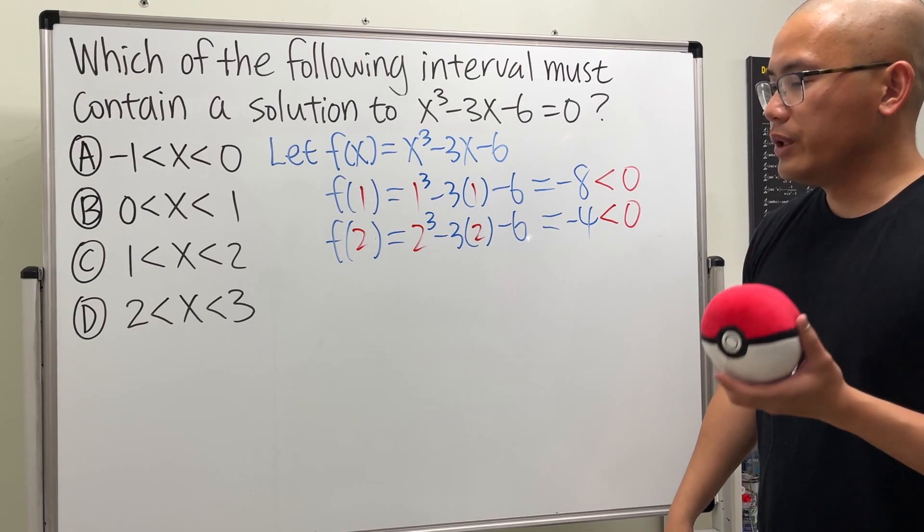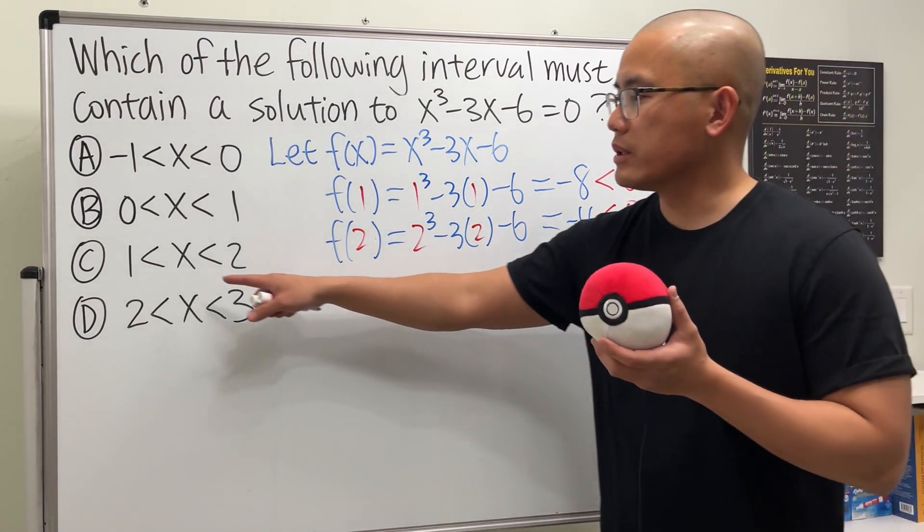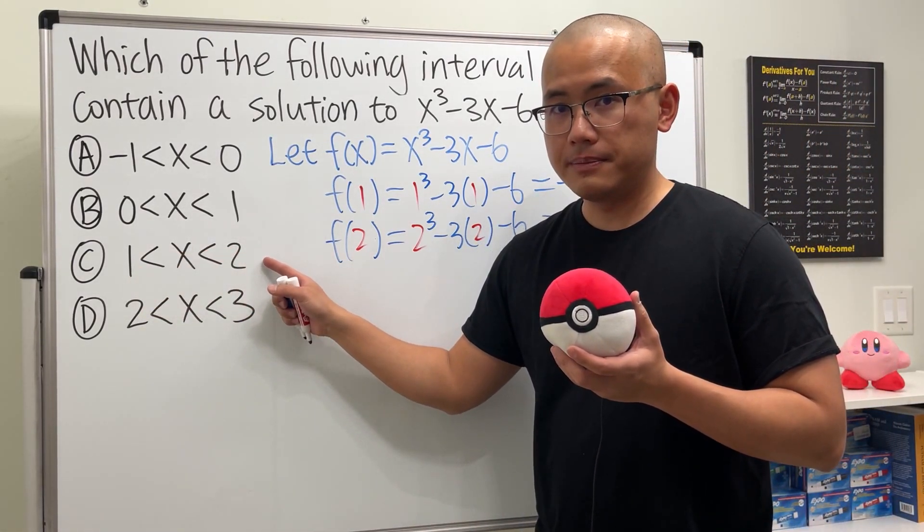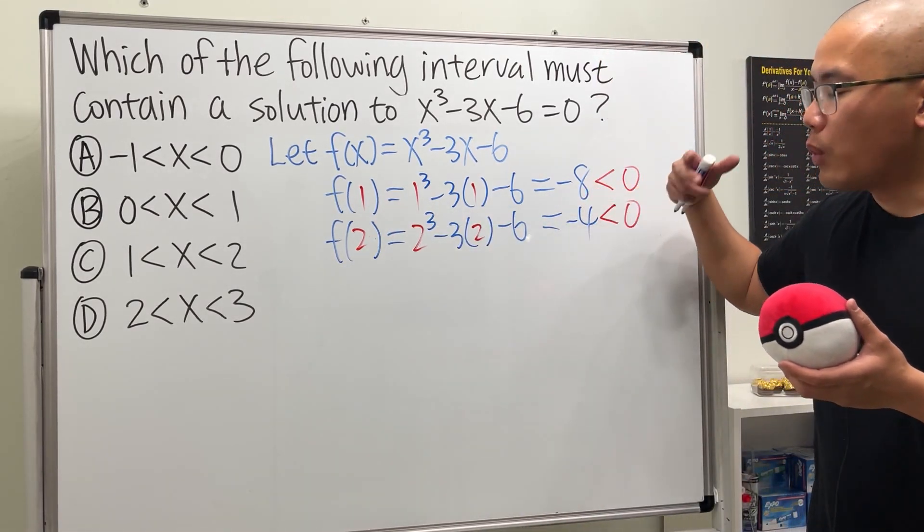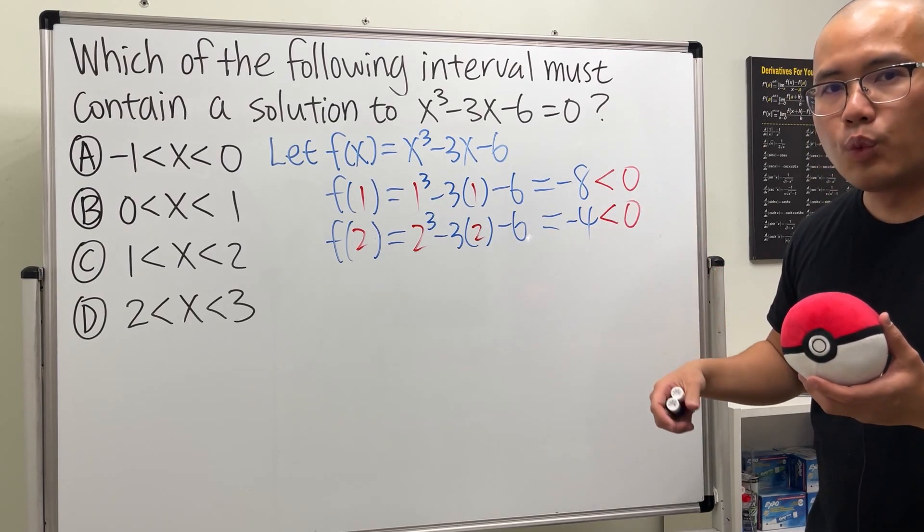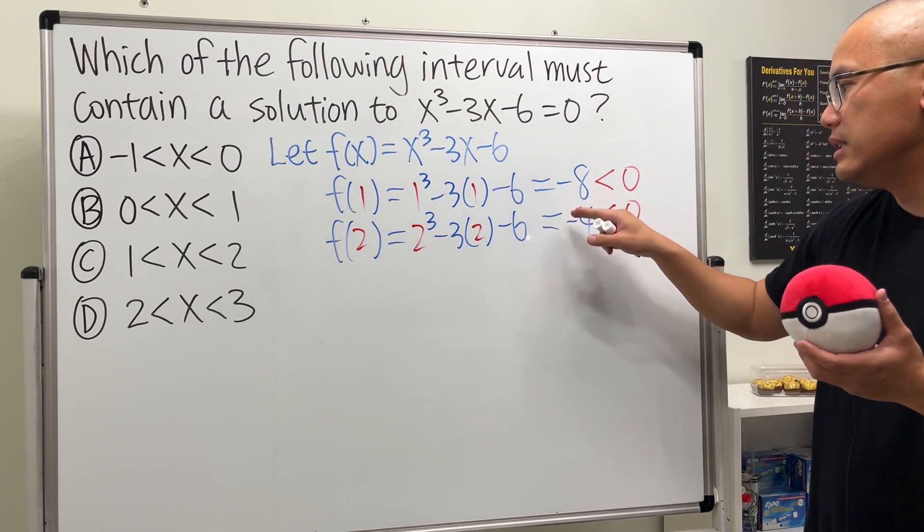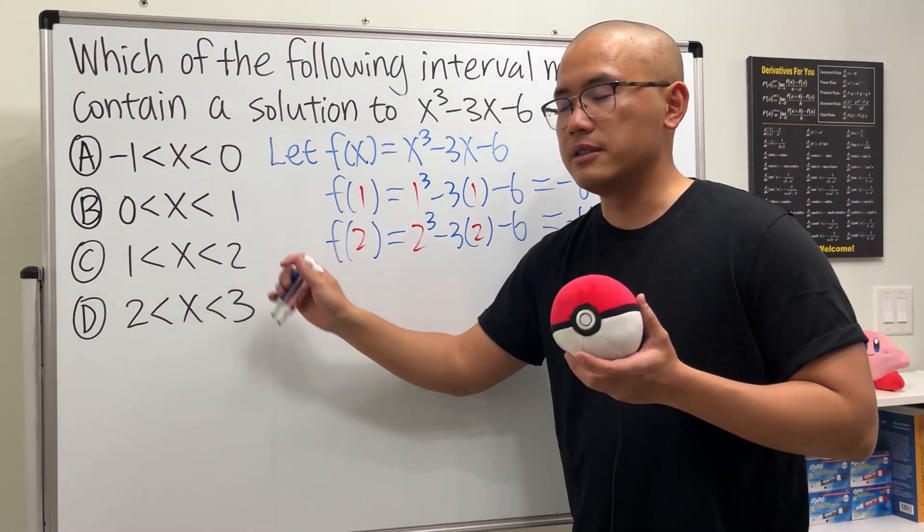So the key for doing this is that we want to test out the value at the endpoints. Right, that's what we did. And we are looking for, we get one positive number and then the other one being negative. But because these are both negative, so this right here is not the answer.